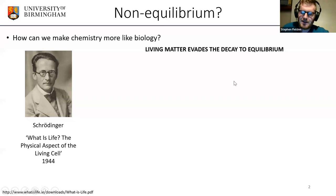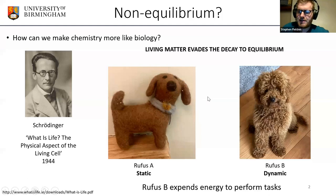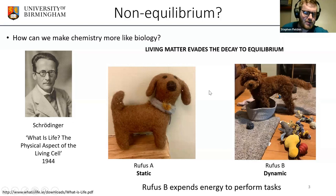A good example of living matter creating non-equilibrium states is in my house, where there are two dogs, both called Rufus — Rufus A and Rufus B. Rufus A sits on the shelf and does nothing, while Rufus B runs around making trouble. These two dogs are made of basically the same elements — chiefly carbon. The difference is that Rufus B is able to expend energy to perform tasks, even if that task is usually making a mess.